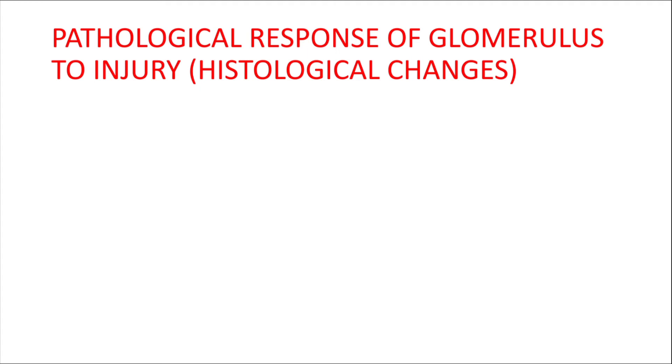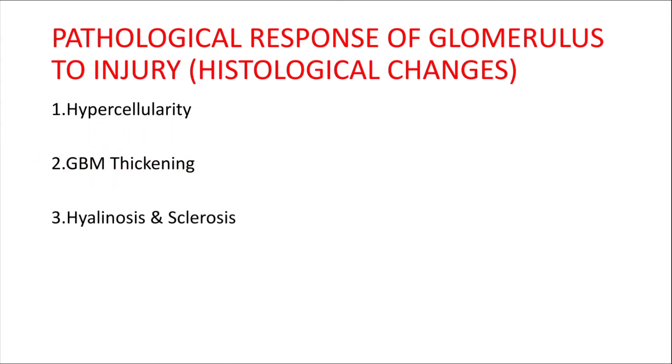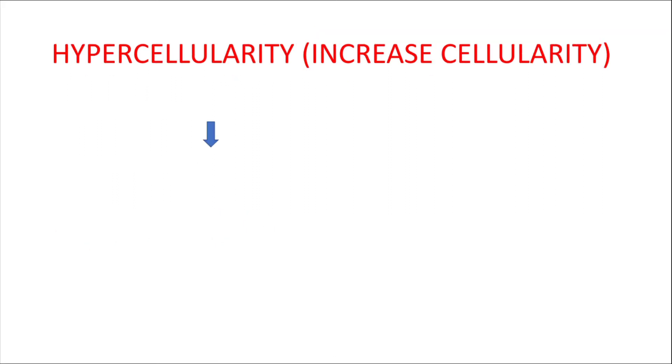Now I will teach you the pathological response of glomerulus to injury — that is, which histological changes occur following glomerular injury. There are three commonly observed histopathological changes when the glomerulus is injured: first is hypercellularity, second is GBM thickening, and third is hyalinosis and sclerosis.